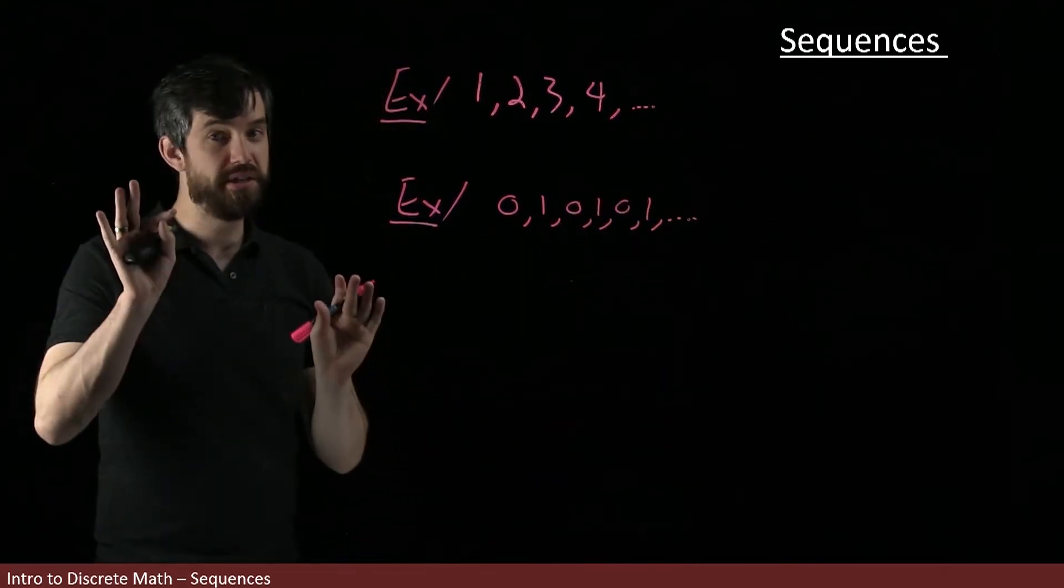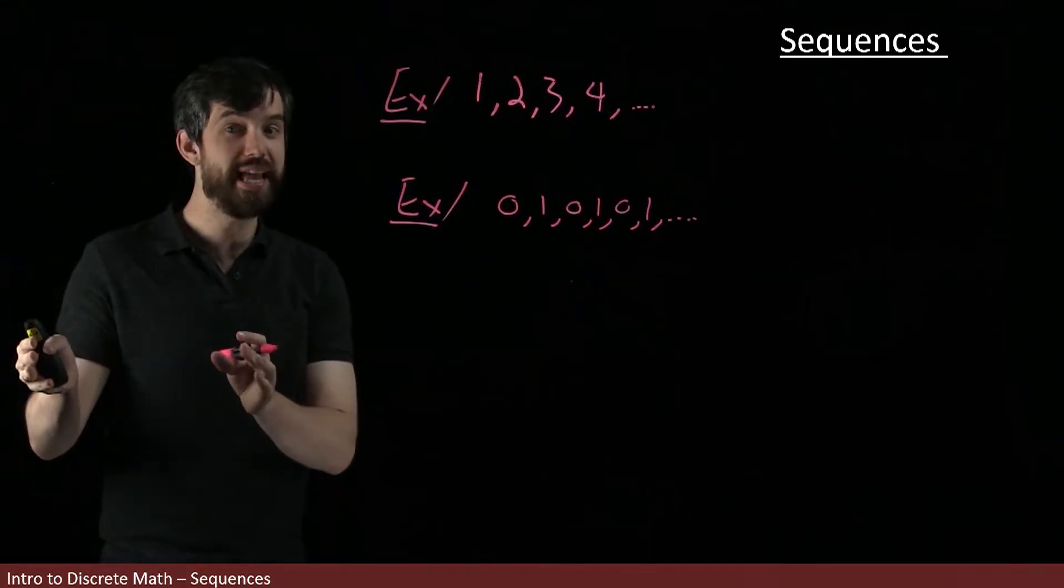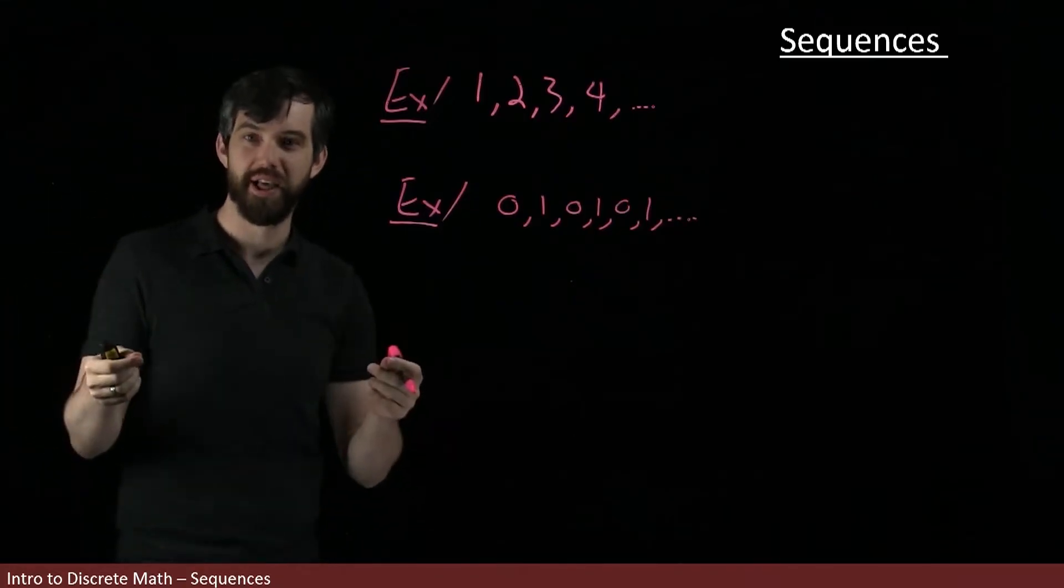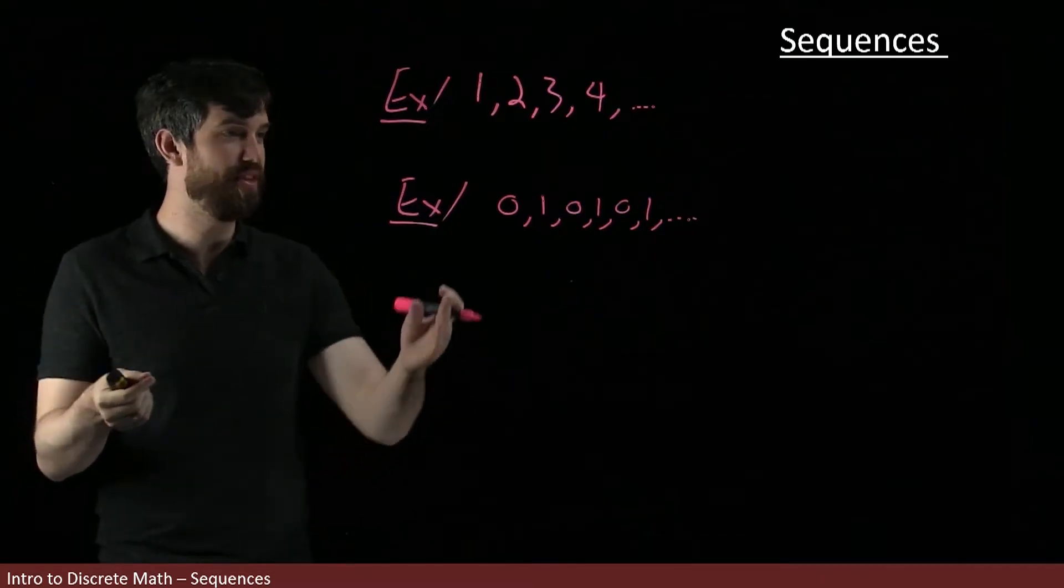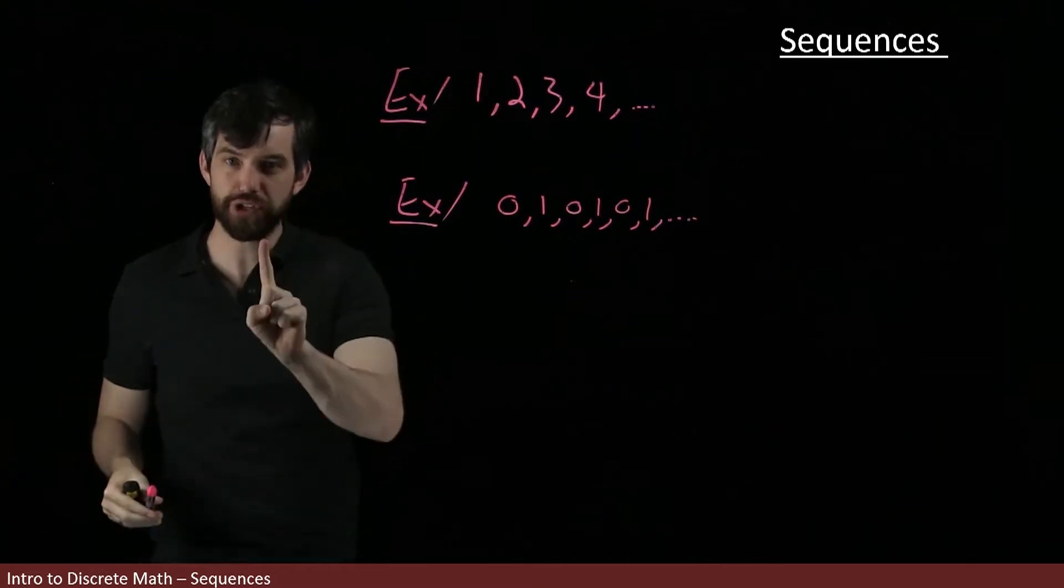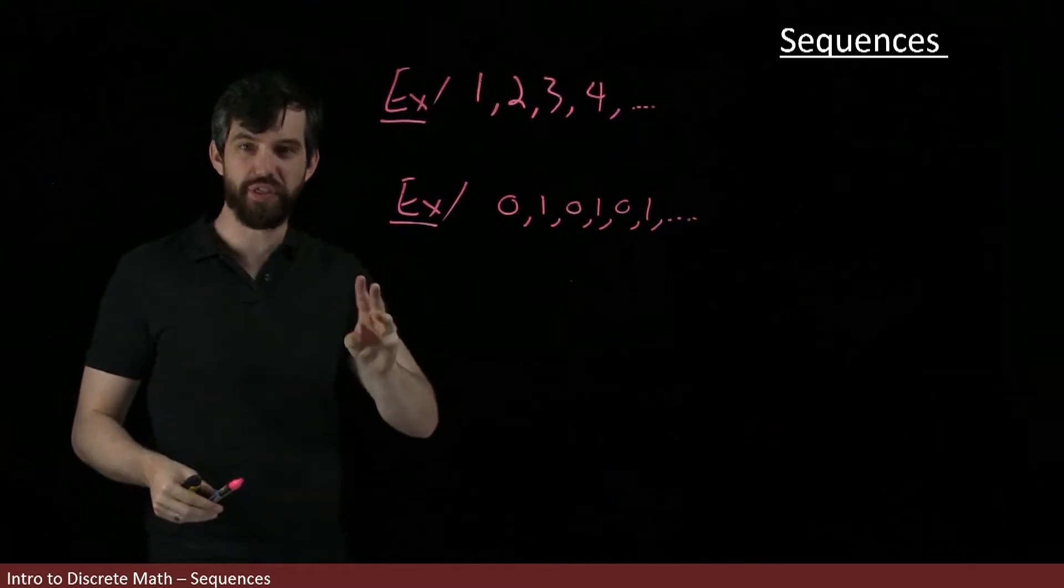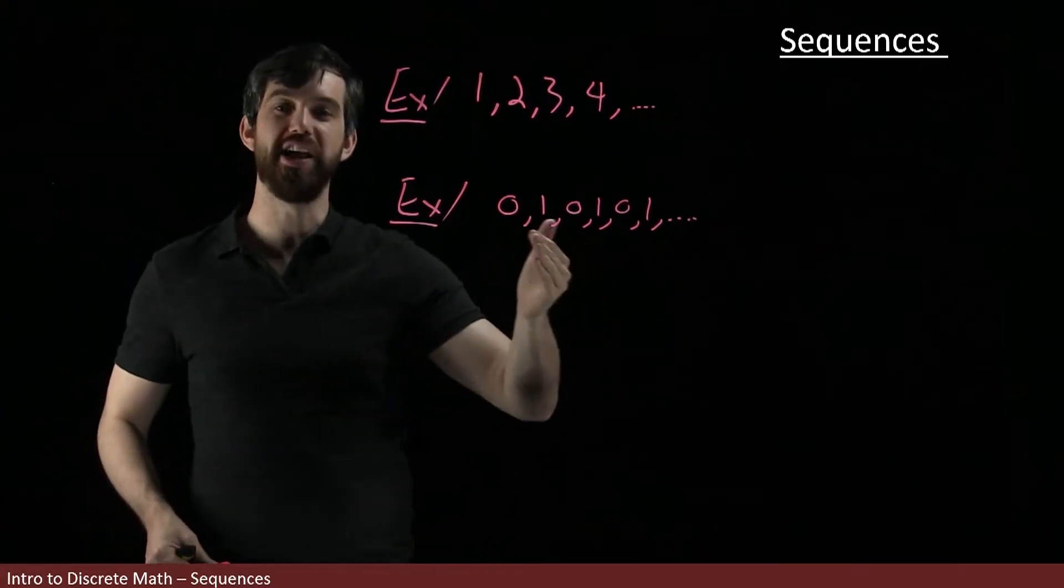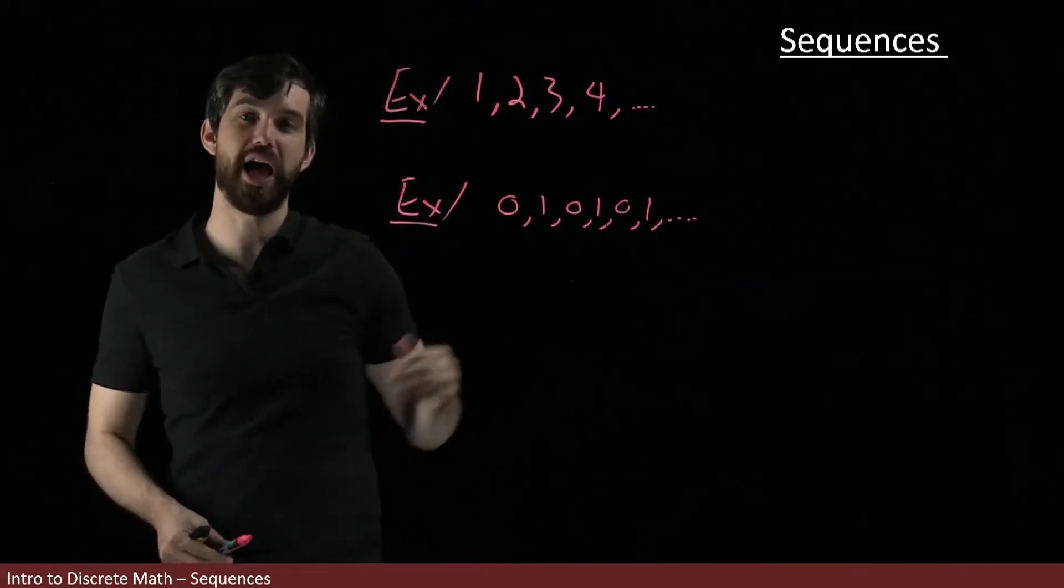Now notice that this is different from our previous idea of a set. In a set, things like order and repetition didn't matter, and this really was just a set of two elements. But that's not what I'm talking about. A sequence is something that's got a first thing, a second thing, a third thing, and so on. And here we have a first thing, a second thing, a third thing, and it goes on forever in this kind of pattern.